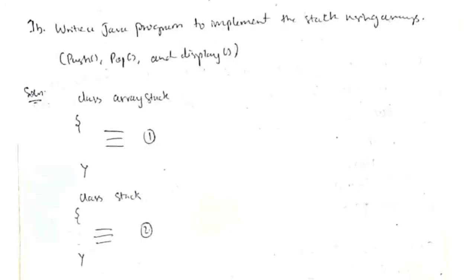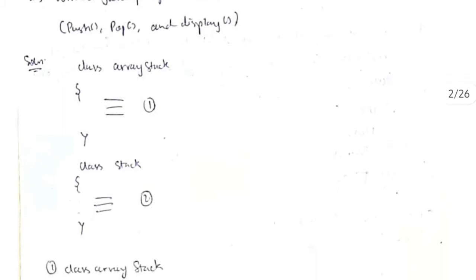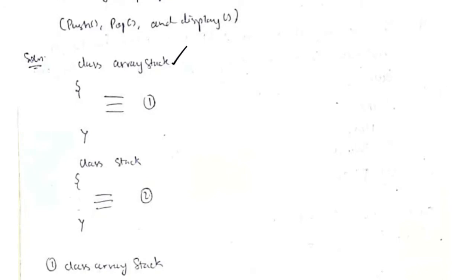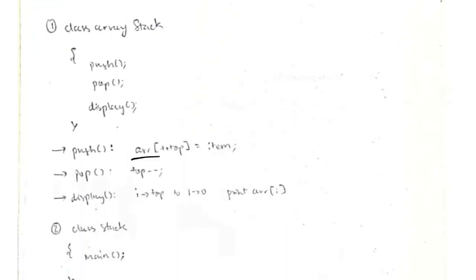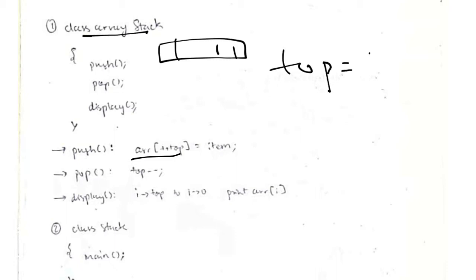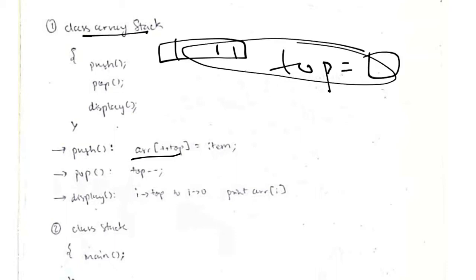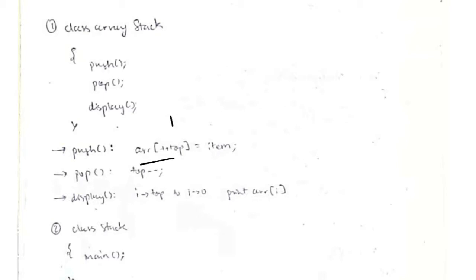Moving on to 1b, we have a Java program to implement stack operations: push, pop, and display. We'll use two classes: ArrayStack and Stack. In ArrayStack we'll have the functions push, pop, and display. We'll initialize the array for stack operations in class Stack, and we'll have a variable for the top. Using the array and top variables, we'll perform push, pop, and display.